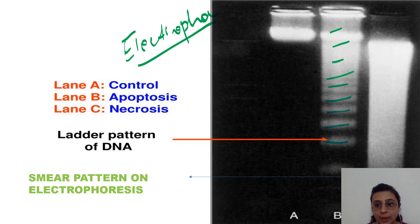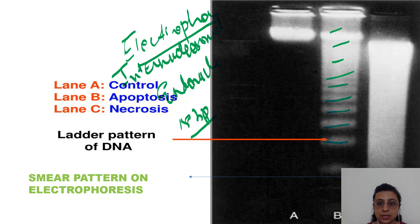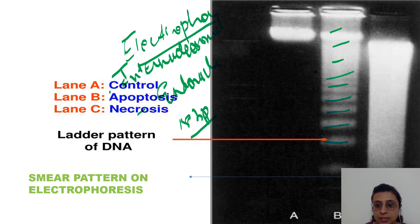At every 180 base pairs distance, there is internucleosomal breakage — with the help of an endonuclease enzyme. This is an important MCQ point. Internucleosomal breakage by an endonuclease enzyme at 180 base pair intervals gives the characteristic step ladder appearance on electrophoresis in apoptosis.